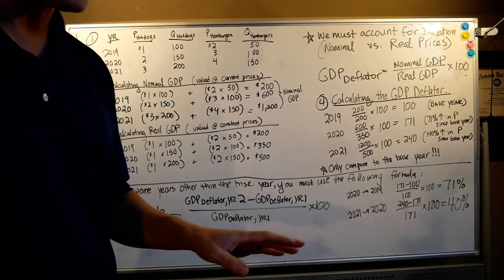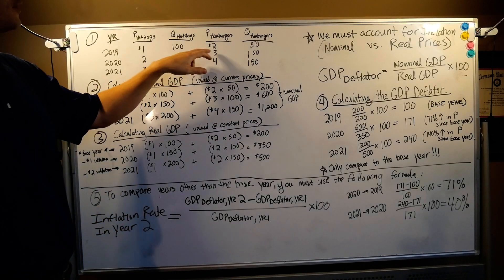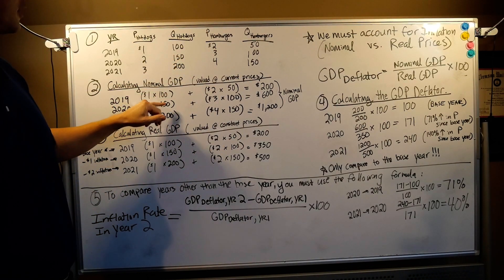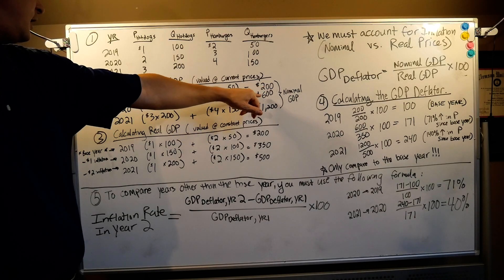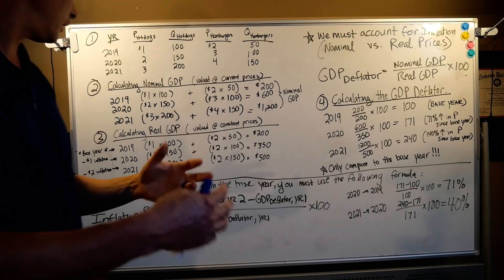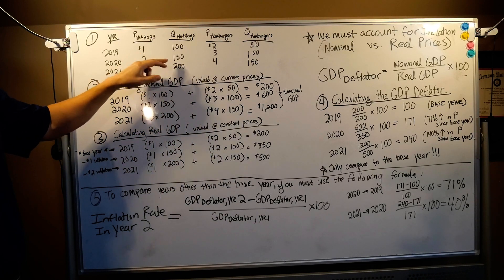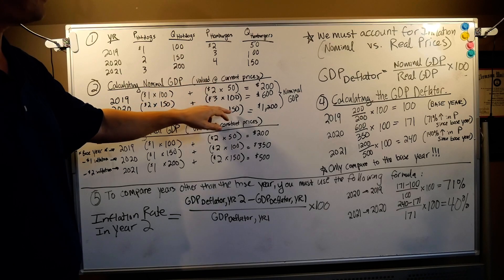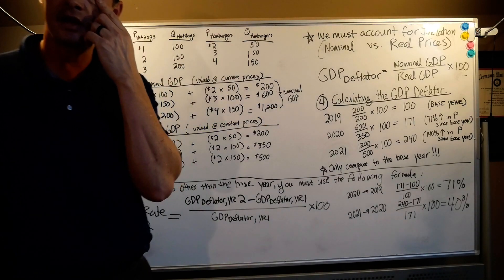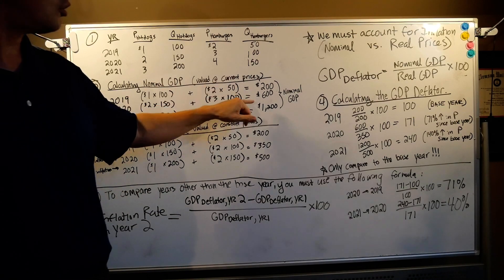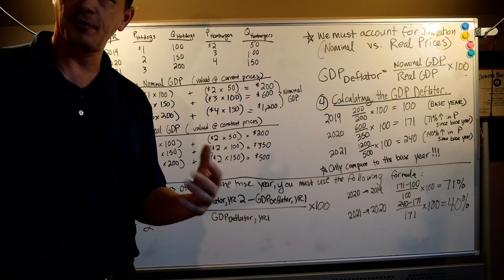So nominal GDP for 2019: one dollar times 100 hot dogs plus two dollars times 50 hamburgers equals 200 dollars. For 2020: two dollars times 150 hot dogs plus three dollars times 100 hamburgers gives a nominal GDP of 600. For 2021: three dollars times 200 hot dogs plus four dollars times 150 hamburgers gives a nominal GDP of 1,200. Our nominal GDP grew from 200 to 600 to 1,200 — that looks like phenomenal growth.